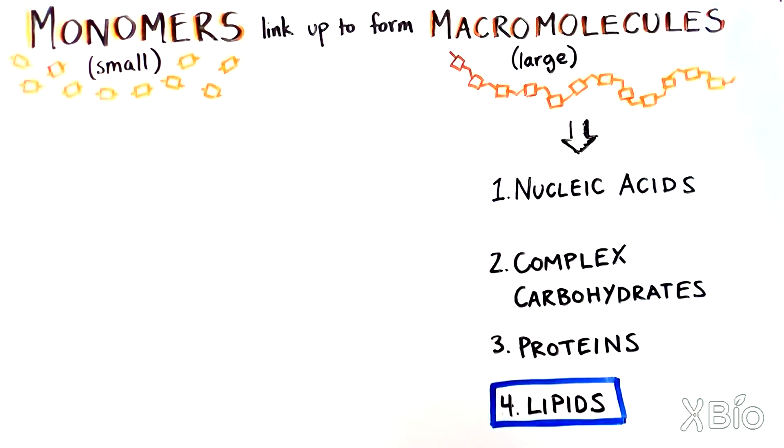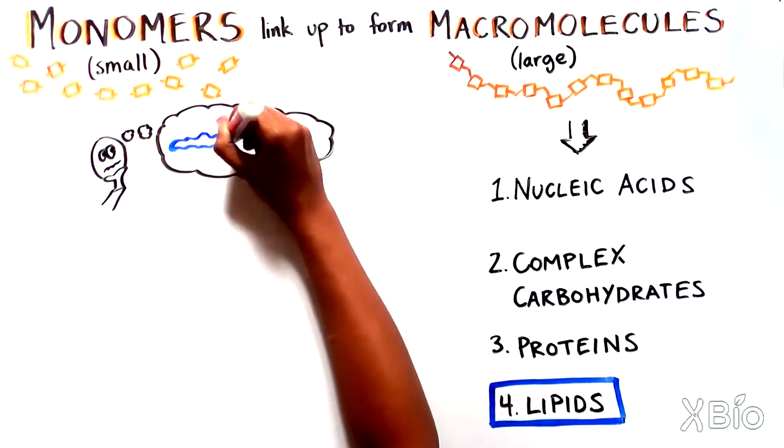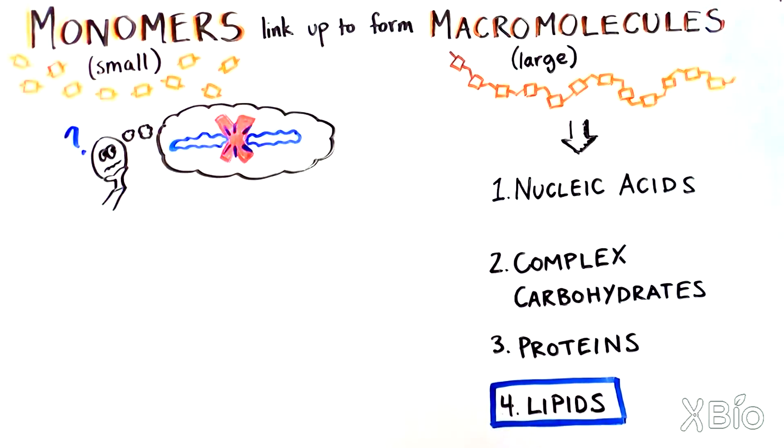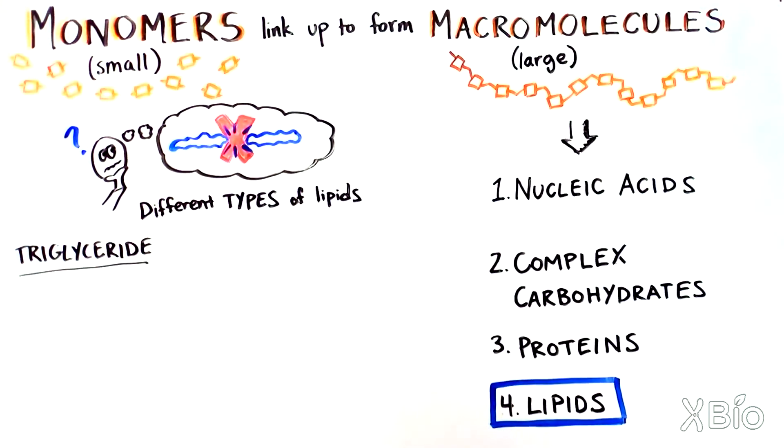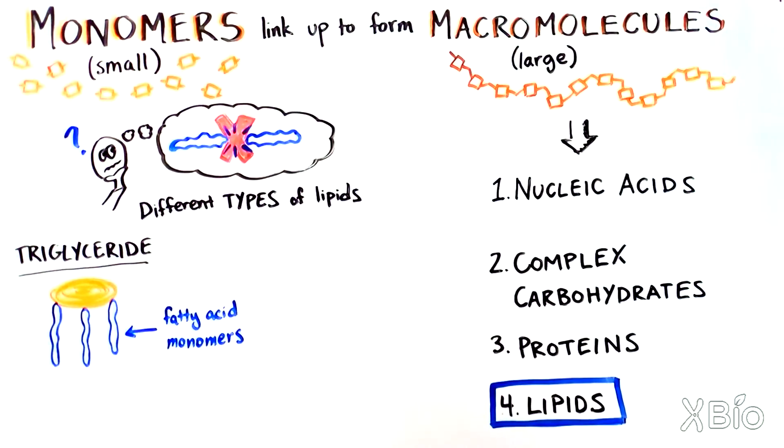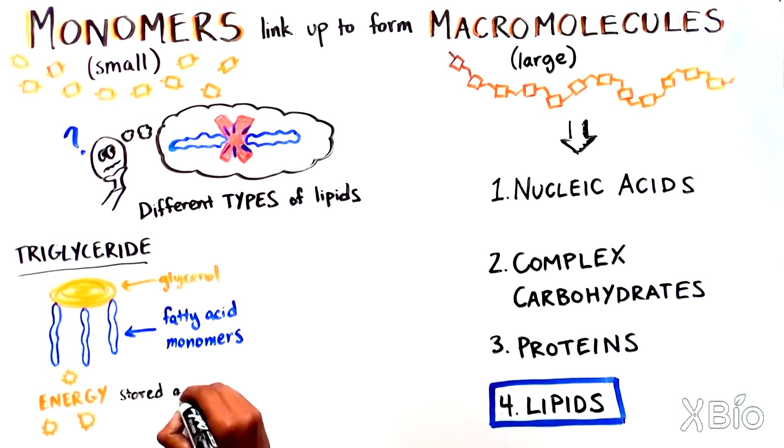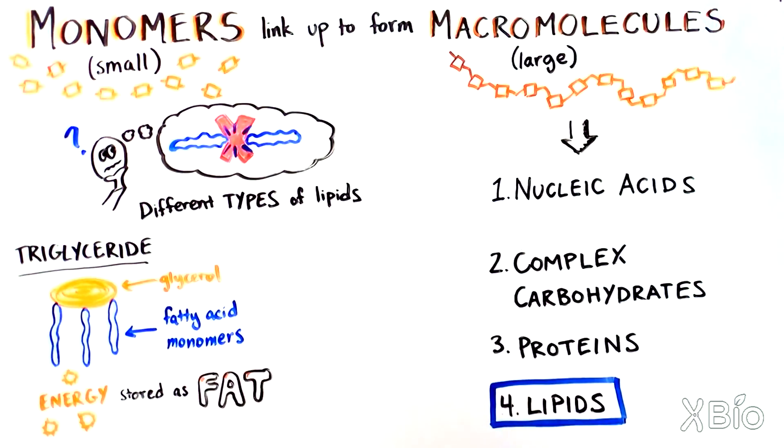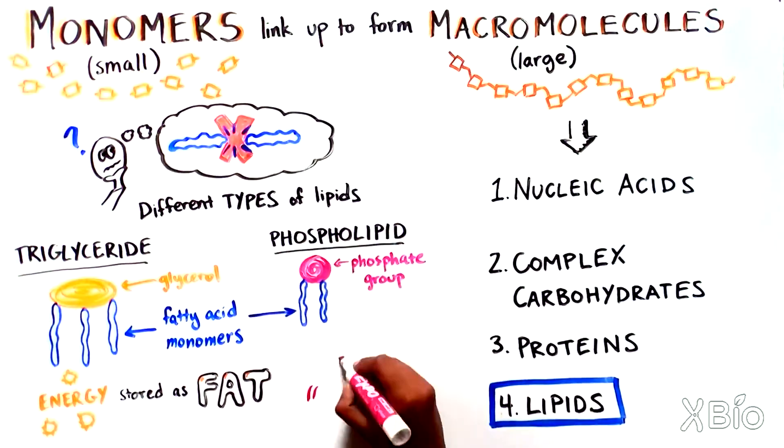We saved lipids for last because they are a little unique. To make lipids, fatty acids do not join up in a line like the other types of monomers. There are several types of lipids. One type is called a triglyceride, where three fatty acid monomers join up along a glycerol molecule. These are the main way our bodies store energy in the form of fat. Two fatty acids joined to a phosphate group forms a phospholipid, which is the main component of our cell membranes.